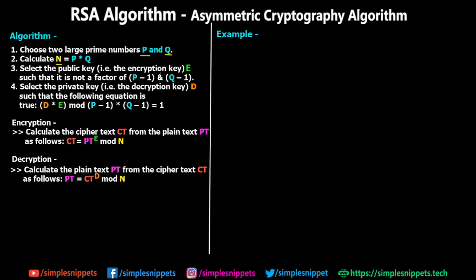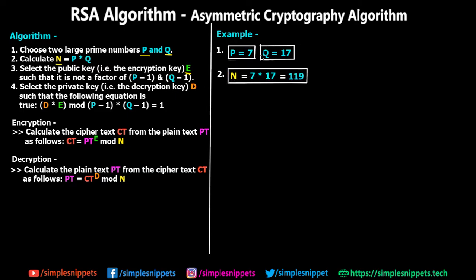In reality, prime numbers used in RSA are very large, on the order of 9 to 10 digits or even more, which is what makes the algorithm extremely difficult to crack. Now, step three: select the public key E such that it is not a factor of (P−1) × (Q−1). We need to understand why small numbers are used here — it's purely for demonstration so we can perform all calculations manually.